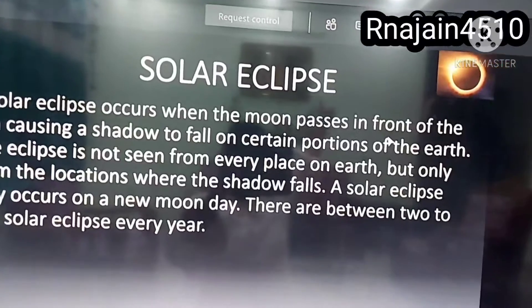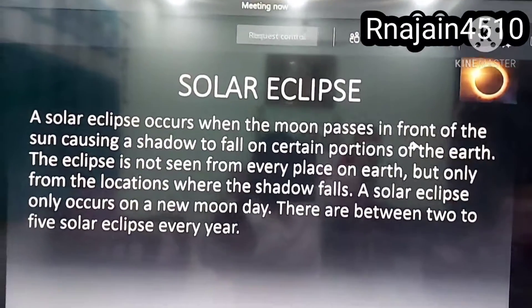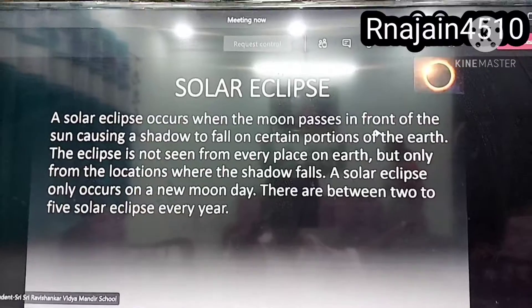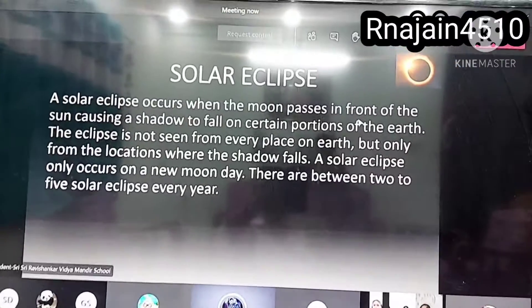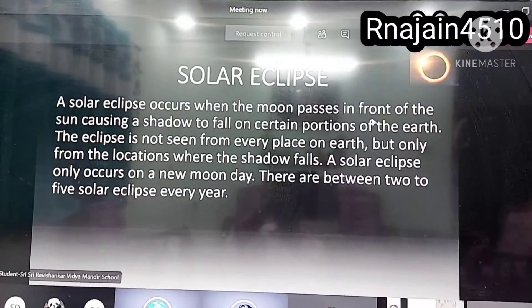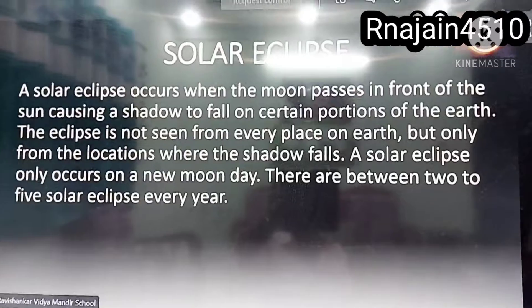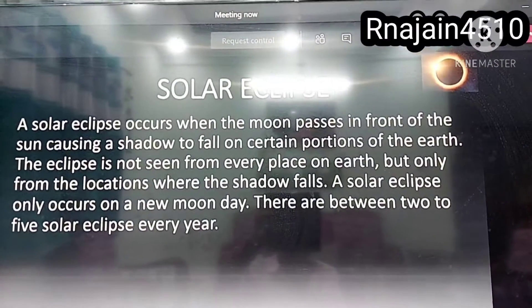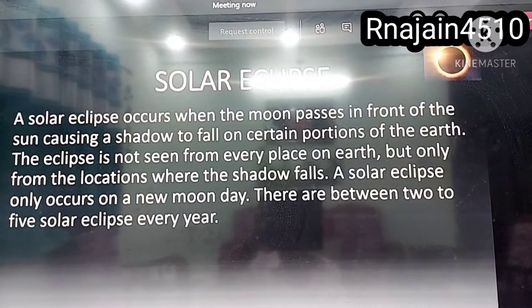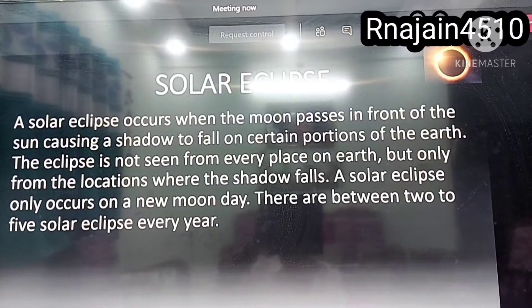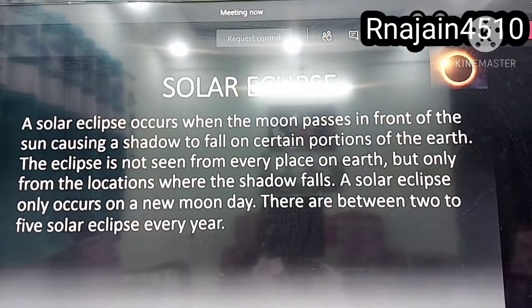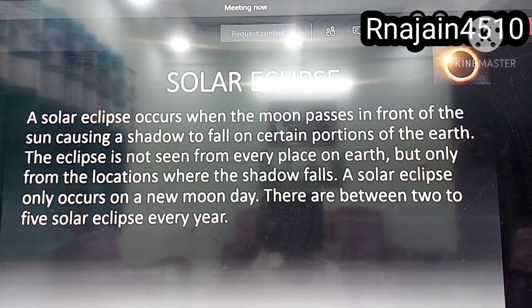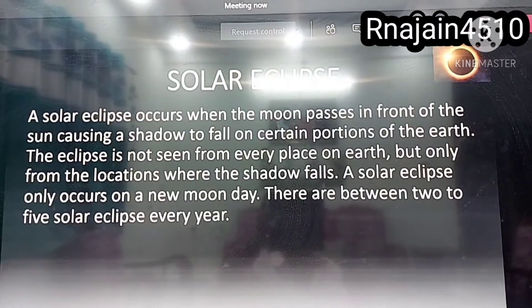A solar eclipse occurs when the moon passes in front of the sun, causing a shadow to fall over certain portions of the earth. The eclipse is not seen from every place on the earth, but only from the locations where the shadow falls. A solar eclipse only occurs on a new moon date, and there are between two to five solar eclipses every year.